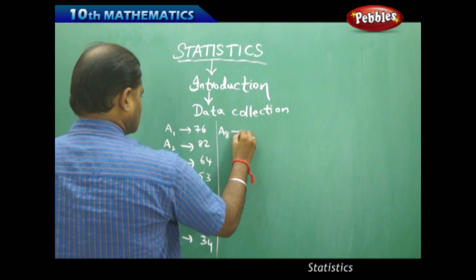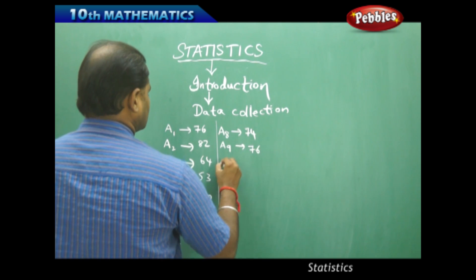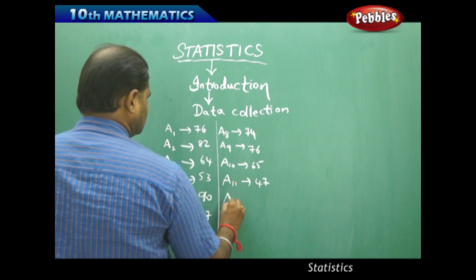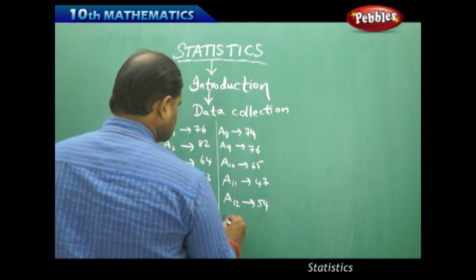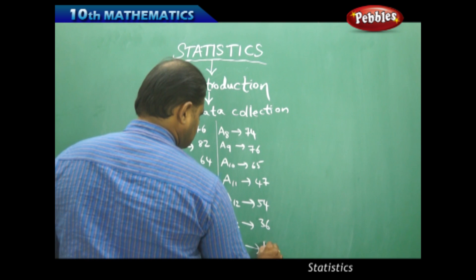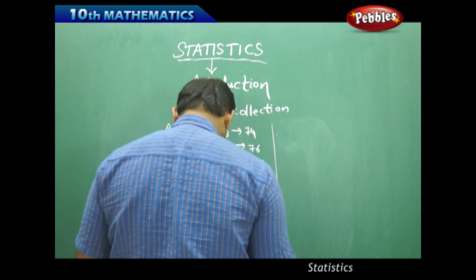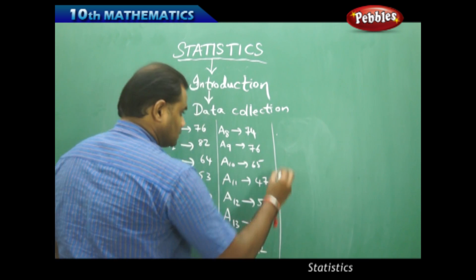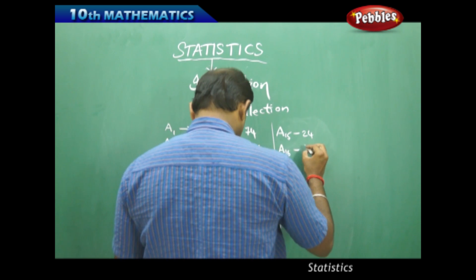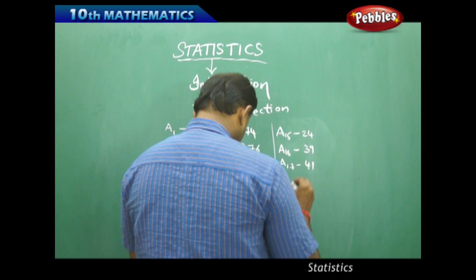Continuing with the data: A8 got 74 out of 100, A9 got 76, A10 got 65, A11 got 47, A12 got 54, A13 got 36, A14 got 12, and A15 got 24, A16 got 39, A17 got 41, and A18 got 69.